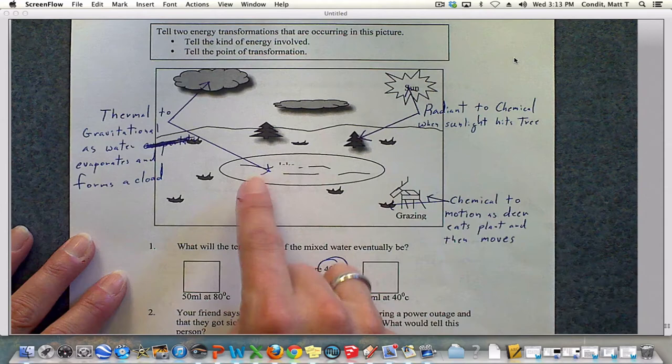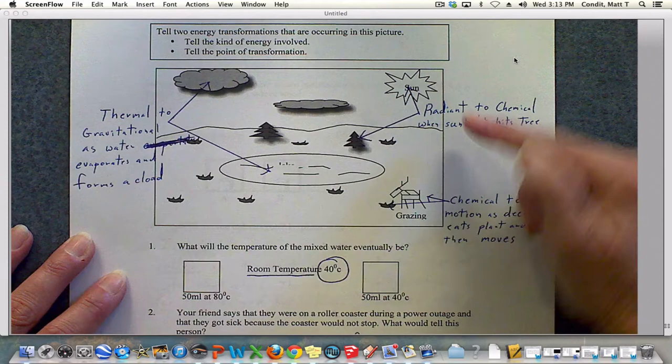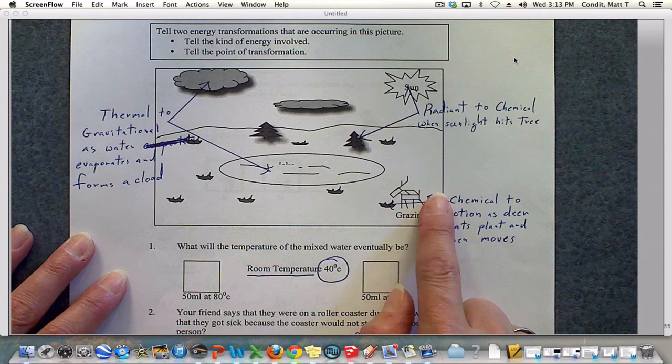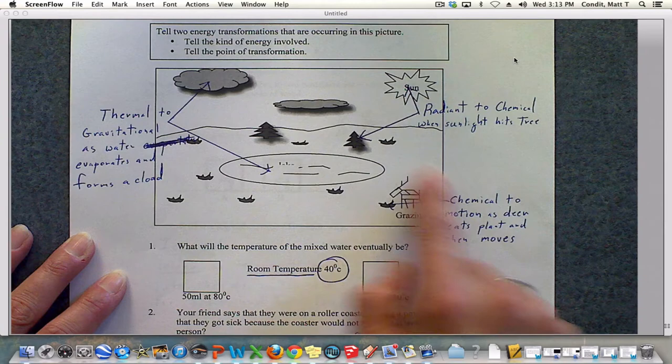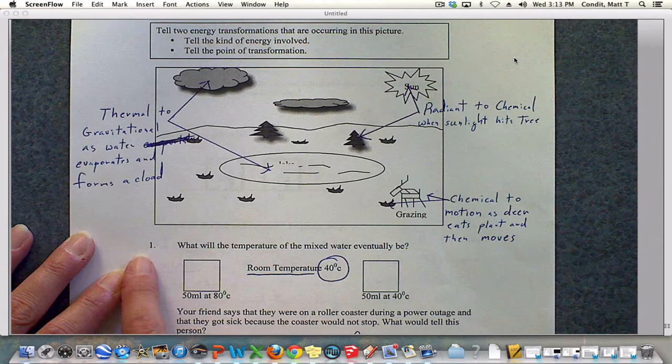For example, we can have thermal to gravitational as water evaporates and forms a cloud. We can have radiant from the sun to chemical when the sunlight hits a tree. We can have chemical to motion as the deer eats the plant and then moves. There's more transformations that could occur there. These are just three that are available.